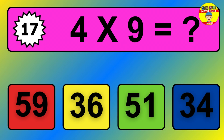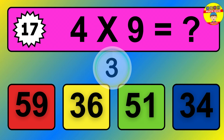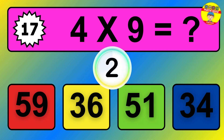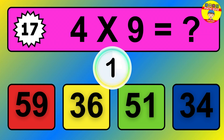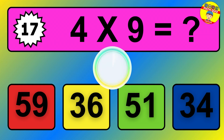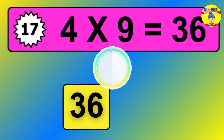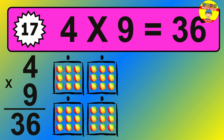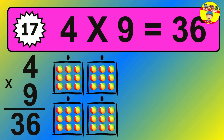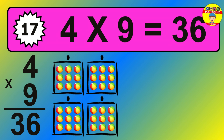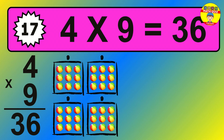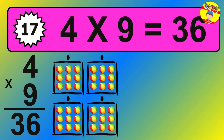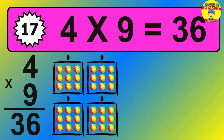Question 17. 4 times 9 equals what? The answer is 4 times 9 is 36. To calculate, we have 4 groups with 9 balls each one. So how many balls do we have? 36 balls.